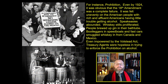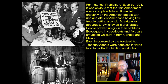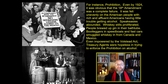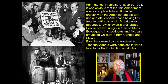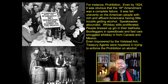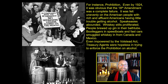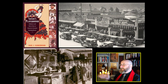For example, Prohibition. Even by 1924, it was obvious that the 18th Amendment was a complete and total failure. It was felt very unevenly, with rich and affluent Americans having little difficulty getting liquor. Speakeasies abounded, whiskey stills proliferated, people brewed gin in their bathtubs. Sometimes bootleggers in speedboats and fast cars would smuggle whiskey in from Canada and Mexico. Even empowered by the Volstead Act, Treasury agents were absolutely, hopelessly overwhelmed trying to enforce Prohibition.